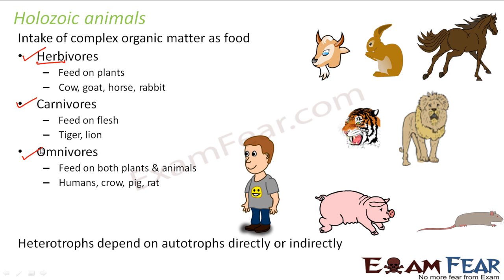Since there were too many holozoic animals, they were further classified depending upon whether they feed only on plants, only on flesh, or on both. Based on our study of modes of nutrition, we concluded that heterotrophs depend on autotrophs directly or indirectly. Autotrophs prepare their own food and are self-dependent. Heterotrophs depend on autotrophs directly when they feed on plants – for example, herbivores. They depend indirectly when they feed on something which itself feeds on plants. Carnivores are indirectly dependent on plants because they feed on other animals – for example, a lion feeds on a goat, but the goat feeds on plants.